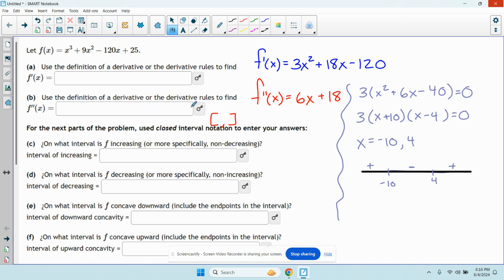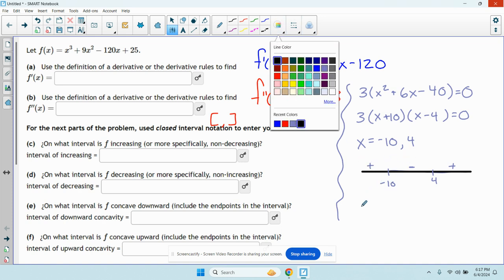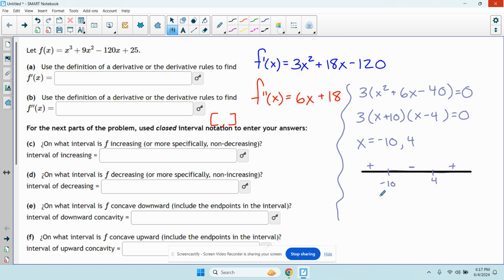So it looks like at negative 10, my derivative is going from positive to negative. So my function, the graph of the function is going from increasing to decreasing. And at 4, it's going from negative to positive. So my function is going from decreasing to increasing. So we have a max at negative 10, a min at positive 4.